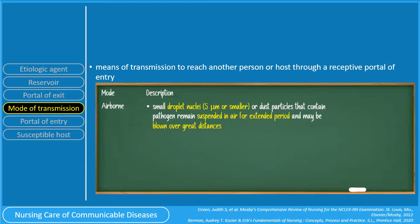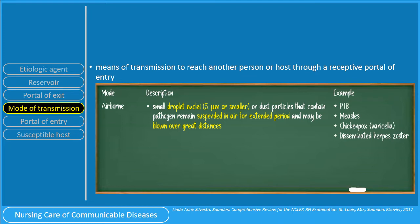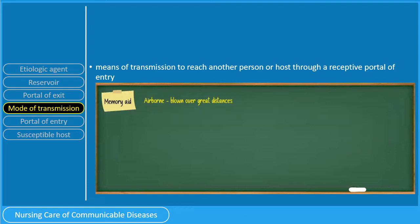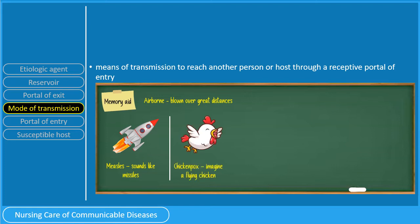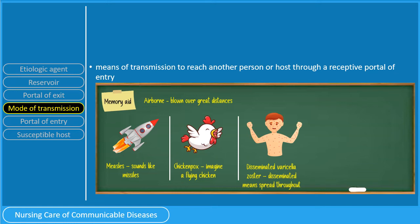Airborne transmission involves droplet nuclei 5 micrometers or smaller, or dust particles that contain pathogens and remain suspended in air for extended periods and may be blown over great distances. Examples include pulmonary tuberculosis, measles, chickenpox or varicella, and disseminated herpes zoster. Measles sounds like missile which covers a great distance; for varicella, imagine a flying chicken covering a great distance; disseminated means spread throughout; and for PTB, imagine the aerosol blown over great distances.